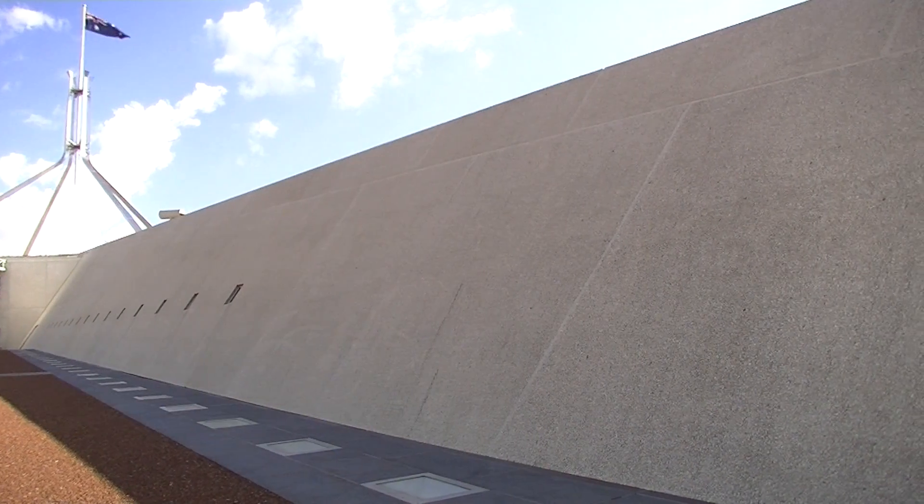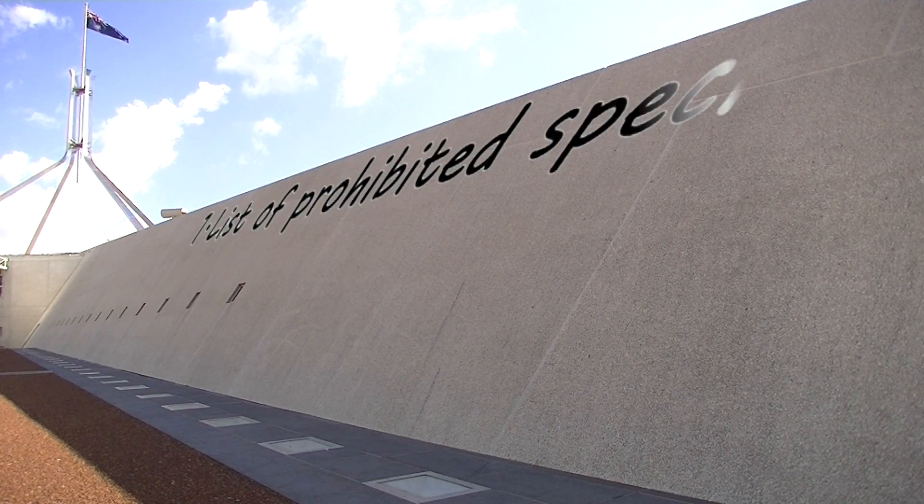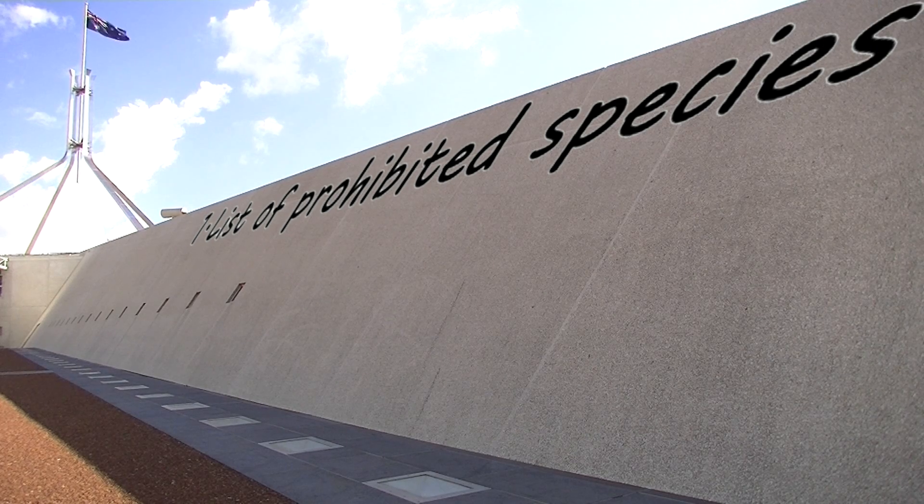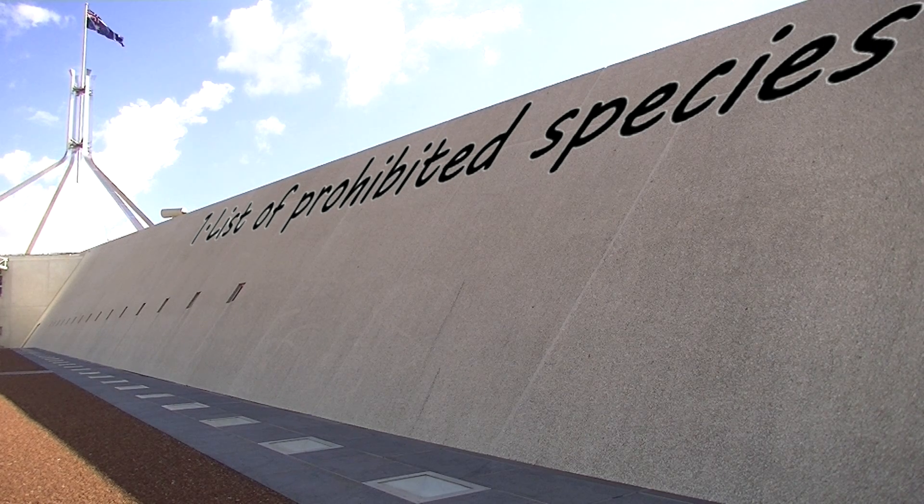Governments could take the lead in four main areas. Countries around the world need a list of species that are prohibited because of their potential impact on the natural environment.